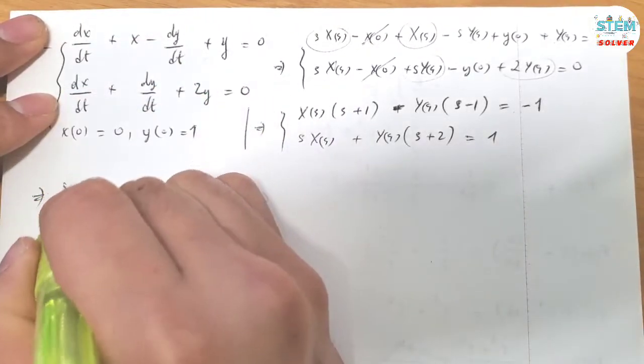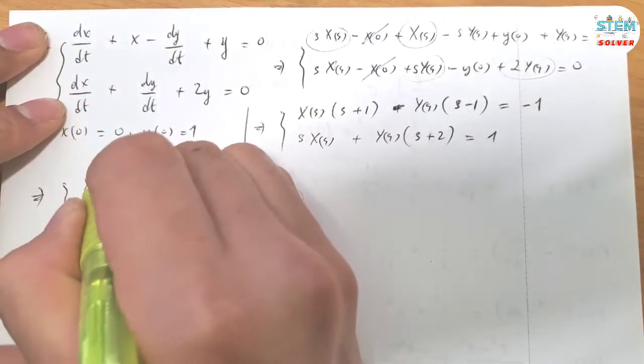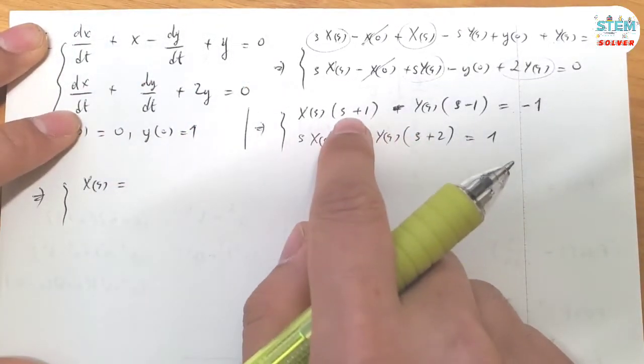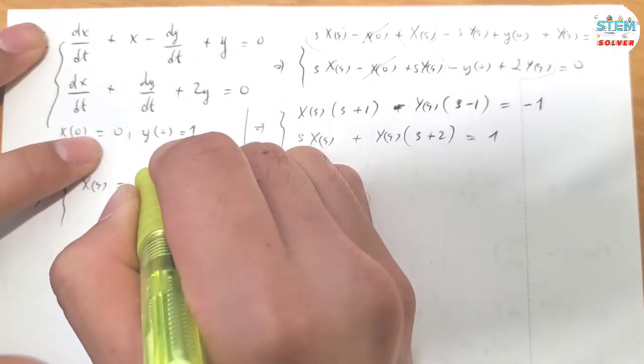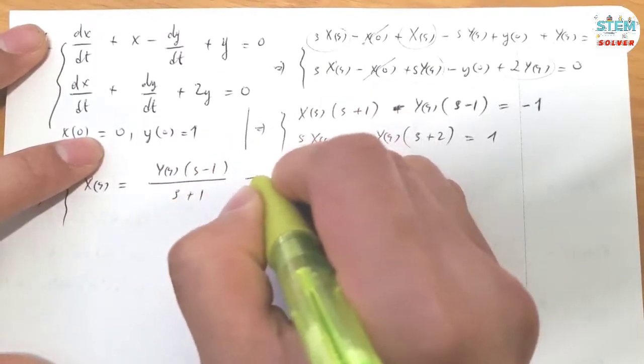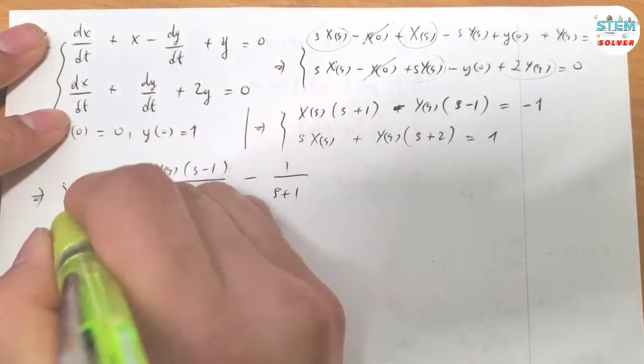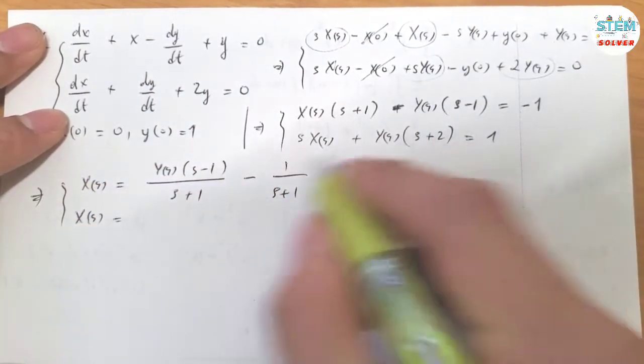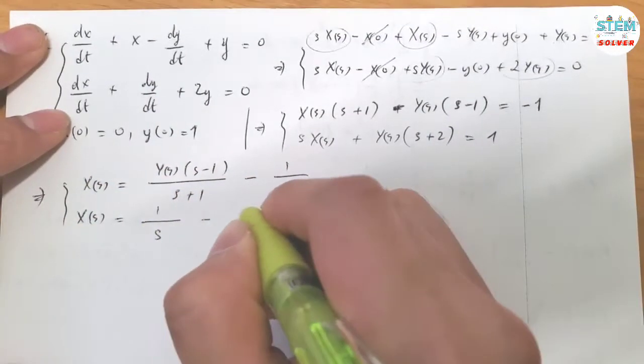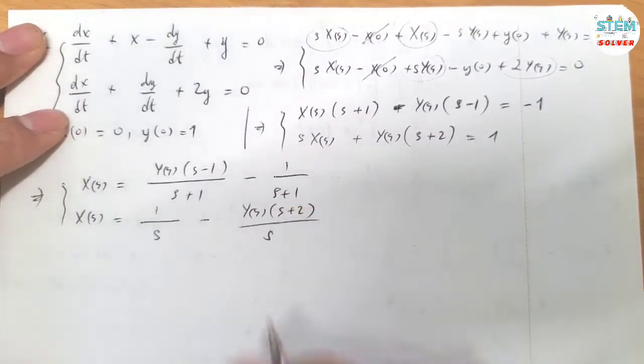Now for the first equation, for this one, I'm going to solve for X(s). That means I divide both sides by S plus 1. So I have this. For the second equation, solve for X(s) again, I have this.